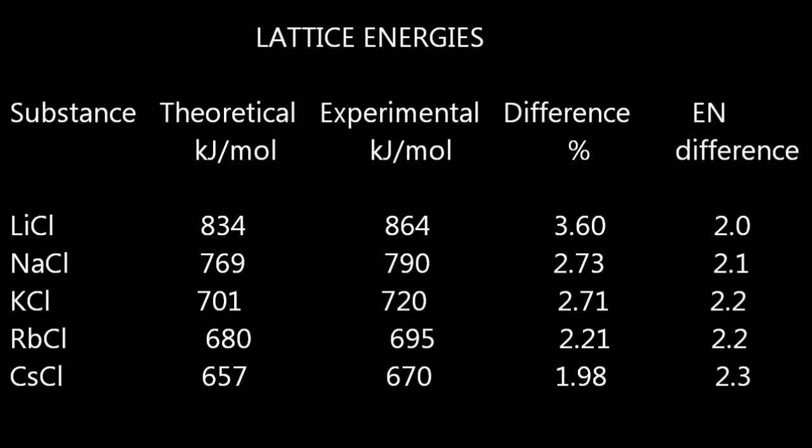If you look at the group 1 metal chlorides here, you can see that lithium chloride has the biggest percentage difference between the theoretical and the experimental values, which means it has the most covalent character, and therefore the least ionic character, of this group of chemicals.